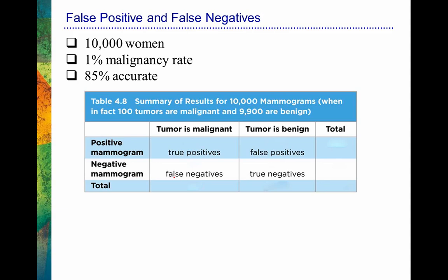Continuing with the table: if the mammogram is positive but the tumor is benign, we call that a false positive — the test is saying there's a problem, but there isn't. And if the mammogram is negative and the tumor is benign, that's a true negative, because the test is telling you there's no problem and indeed there is no problem.